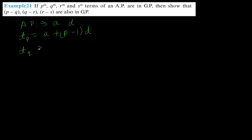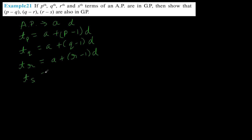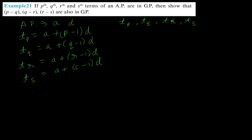Similarly, the Qth term is A plus (Q minus 1) times D, the Rth term is A plus (R minus 1) times D, and the Sth term is A plus (S minus 1) times D. Now it says that these terms — TP, TQ, TR, and TS — are in a geometric progression.